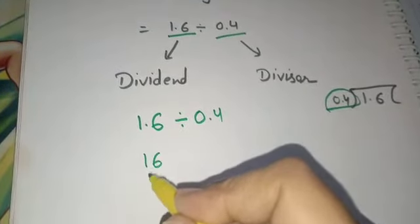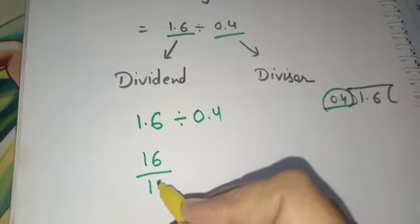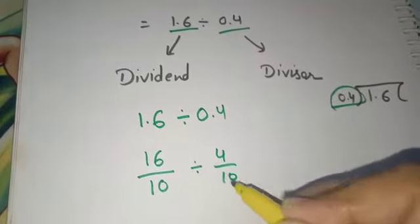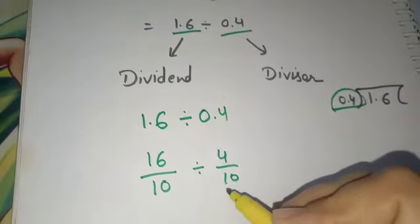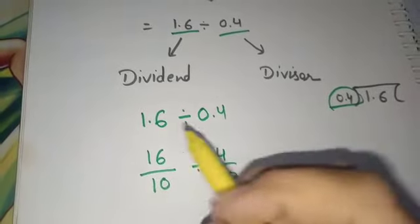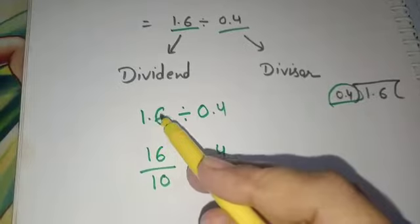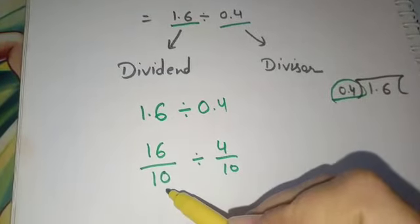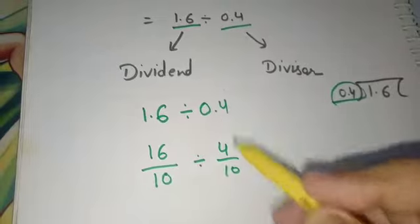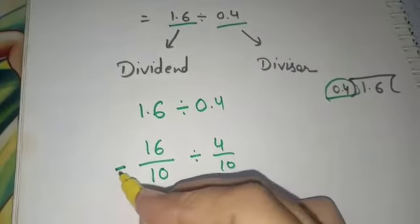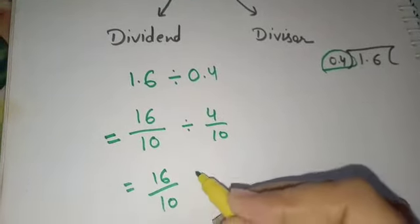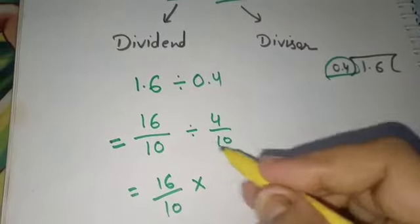By removing the decimal it will be 16 by 10 divides 4 by 10. We have already discussed this in unit 5 that there is only one digit after decimal so 10 will come in denominator. Here also the same thing. Now division of fractions can be done by converting the division sign into multiplication and by taking the reciprocal of another number.